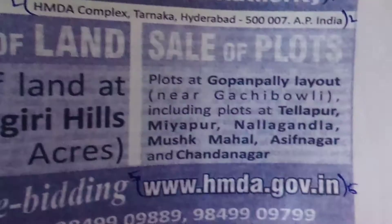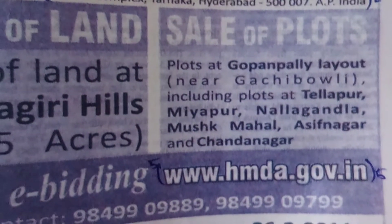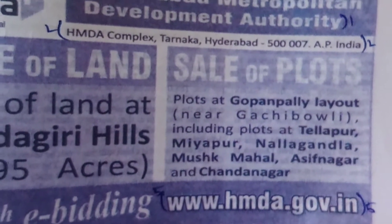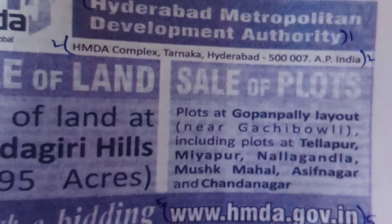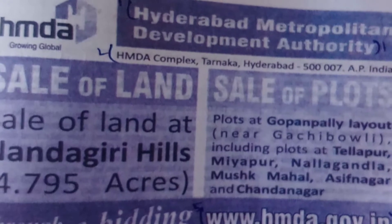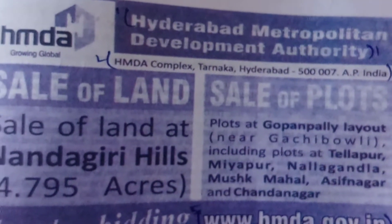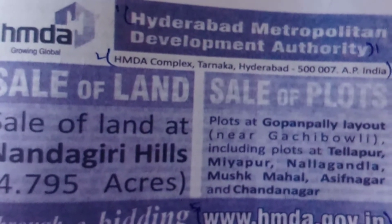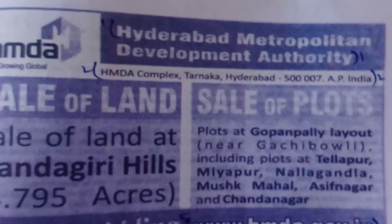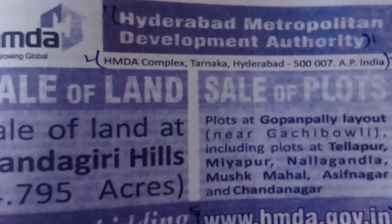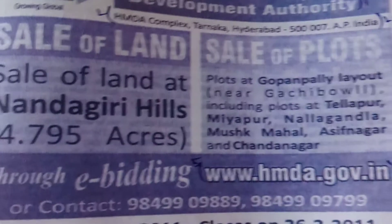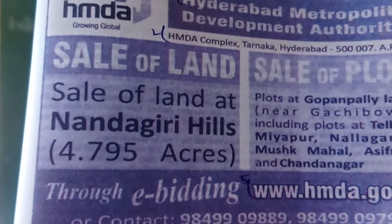Now continue to sale of plots. Plots at Gopanapalli Layout, near Gachibowli, including plots at Tellapur, Miyapur, Nallagandla, Musak Mahal, Asif Nagar, and Chandanagar. Sale of flats: flats at Gopanapalli Layout near Gachibowli, including flats at Tellapur, Miyapur, Nallagandla, Musak Mahal, Asif Nagar, and Chandanagar. These are the locations for sale of flats. Nandagiri Hills is only for sale of land, 4.795 acres.